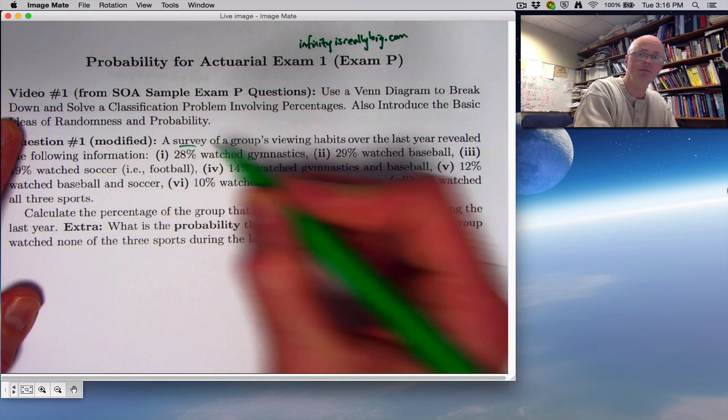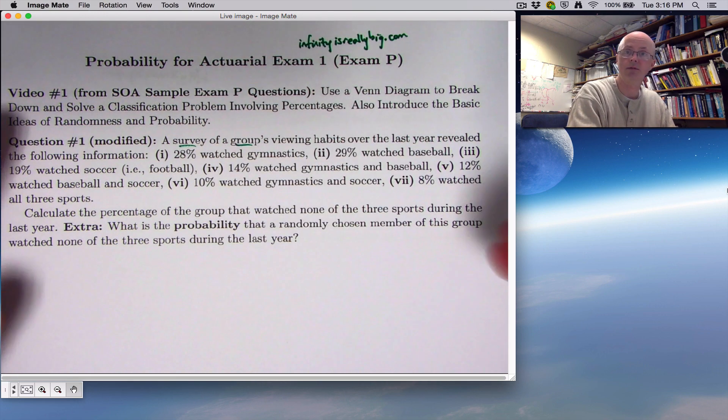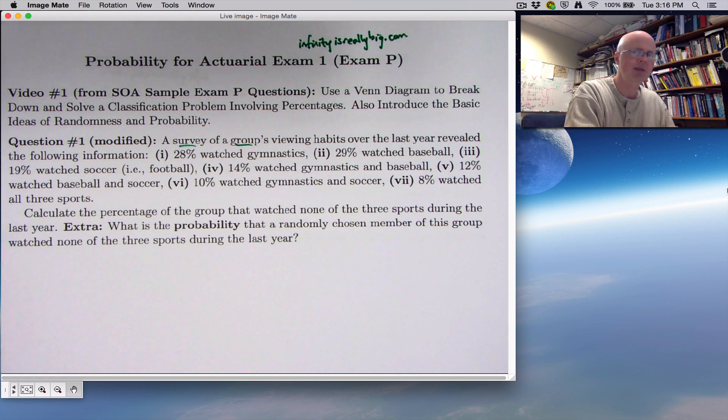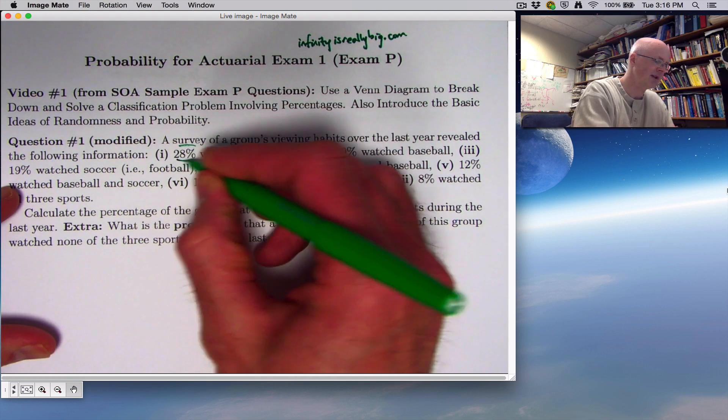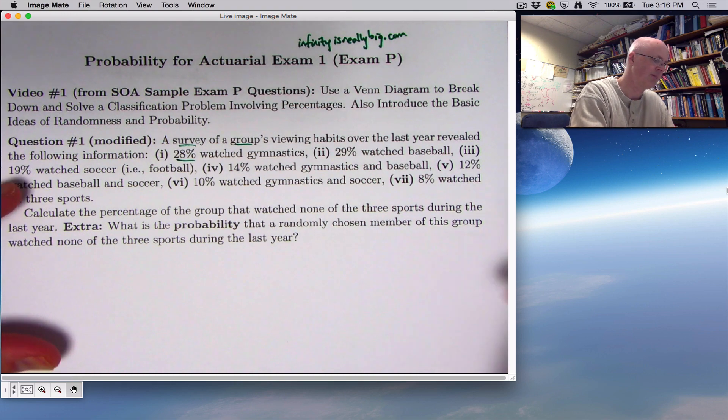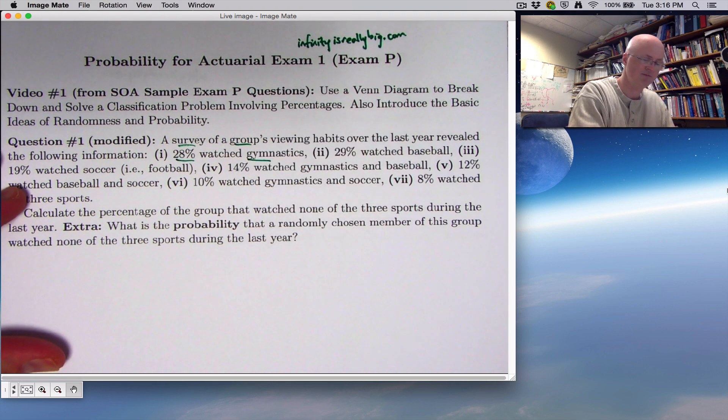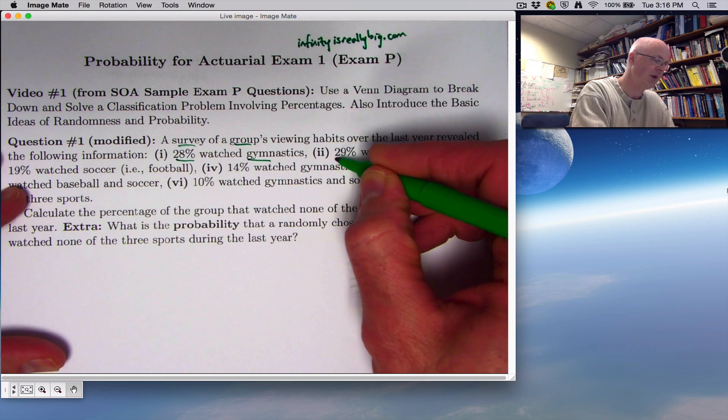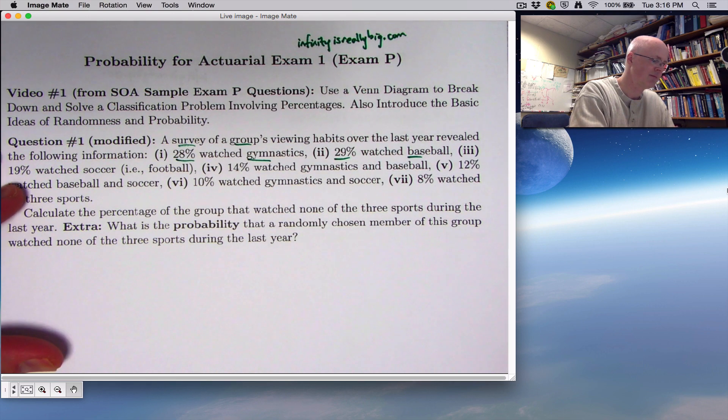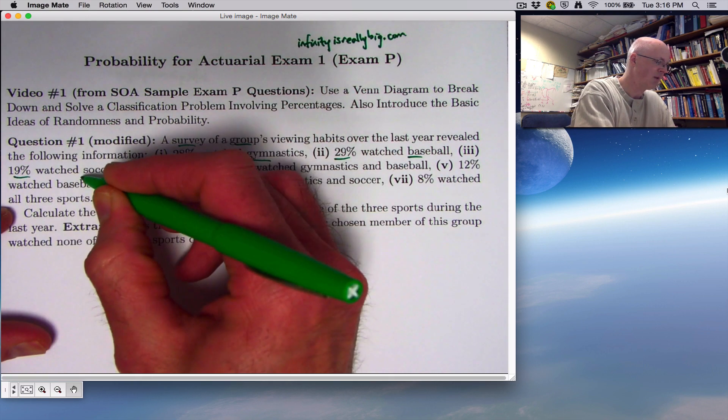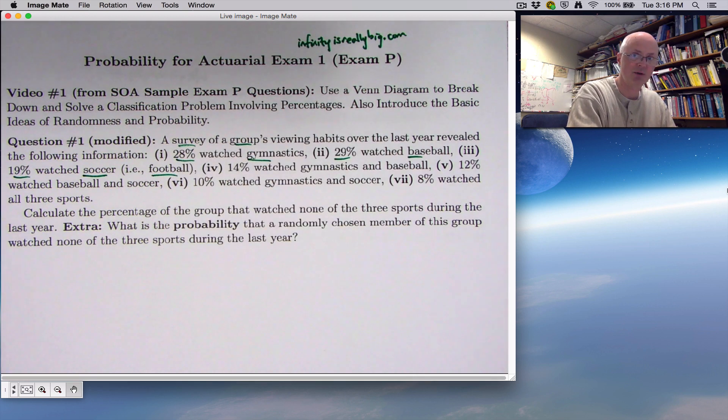We've got a survey of a group of people and their viewing habits for sports. You've got seven pieces of information. It seems kind of overwhelming at first. We need to take it step by step and break it down and use this Venn diagram idea. You're told, first of all, that 28% of these people over the last year watched gymnastics. Then 29% watched baseball. Then 19% watched soccer, or football, of course, in every country but the United States.